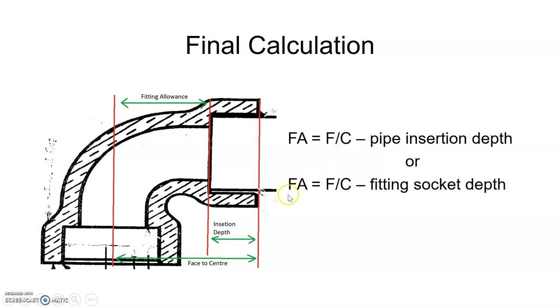You could also write this formula as FA equals F/C minus fitting socket depth. This is the same as saying insertion depth. And this is how we find the FA using a piece of pipe that inserts in, that is not threaded.